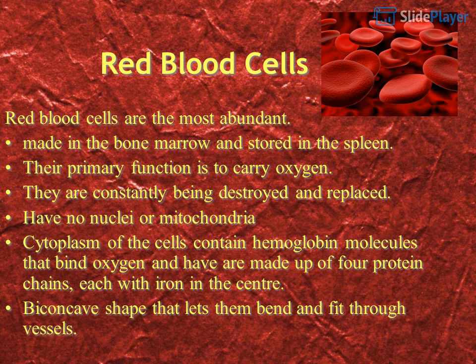The cytoplasm of red blood cells contains hemoglobin molecules that bind oxygen. Hemoglobin is made up of 4 protein chains, each with iron in the center. Red blood cells have a biconcave shape that lets them bend and fit through vessels.